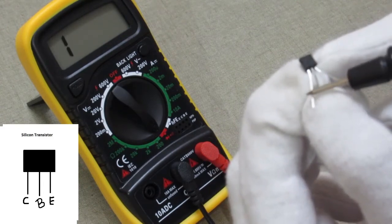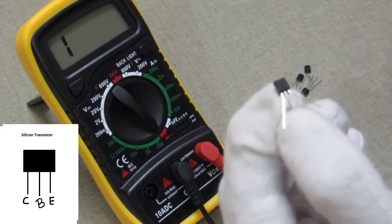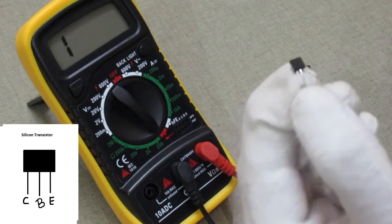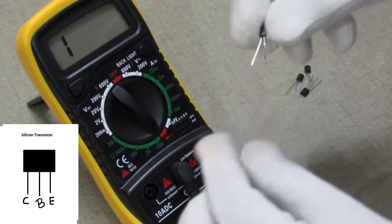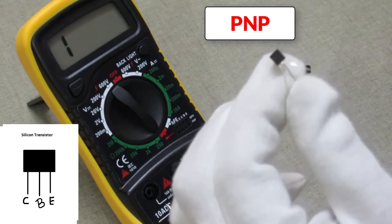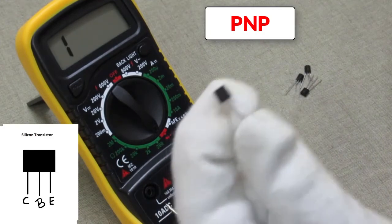Then collector. There is no reading. So guys, this was the double check. We identify the transistor is PNP transistor.